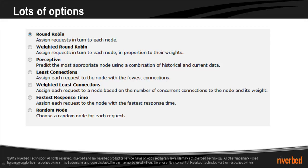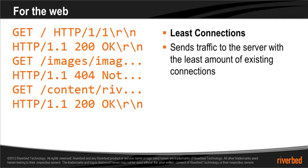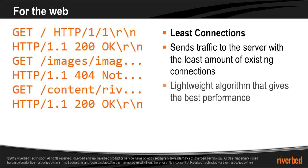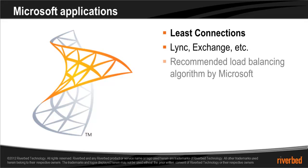The best algorithm to pick depends on the type of application that you're trying to load balance. For general web traffic and web servers, least connections tends to be the best algorithm. Least connections sends traffic to the server with the least amount of existing connections. It is a lightweight algorithm that gives the best performance. For Microsoft applications such as Exchange or Lync, least connections is the most suitable algorithm and is recommended by Microsoft.